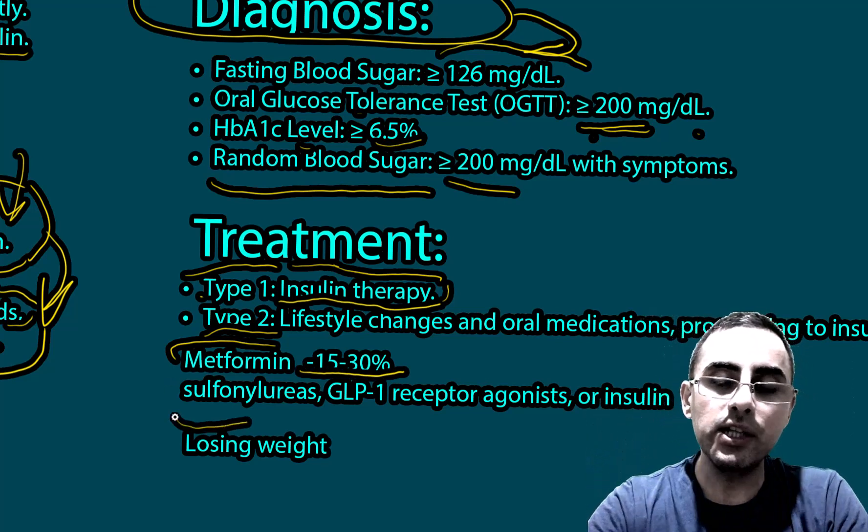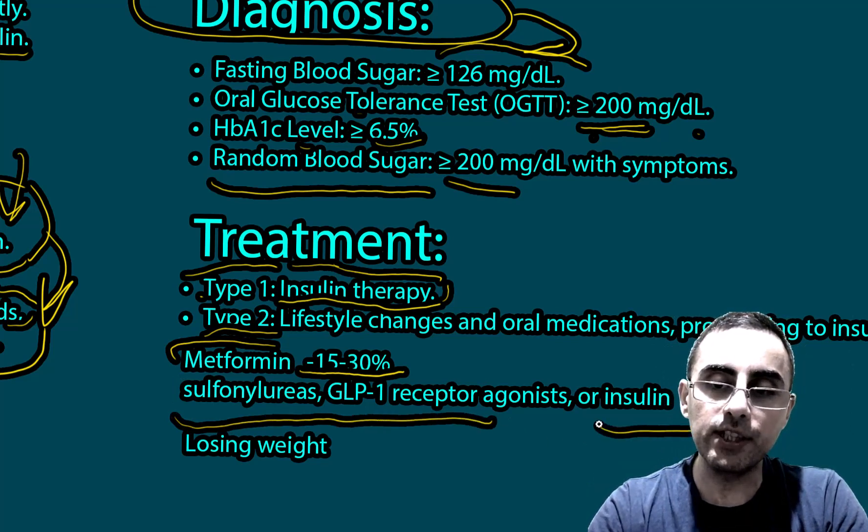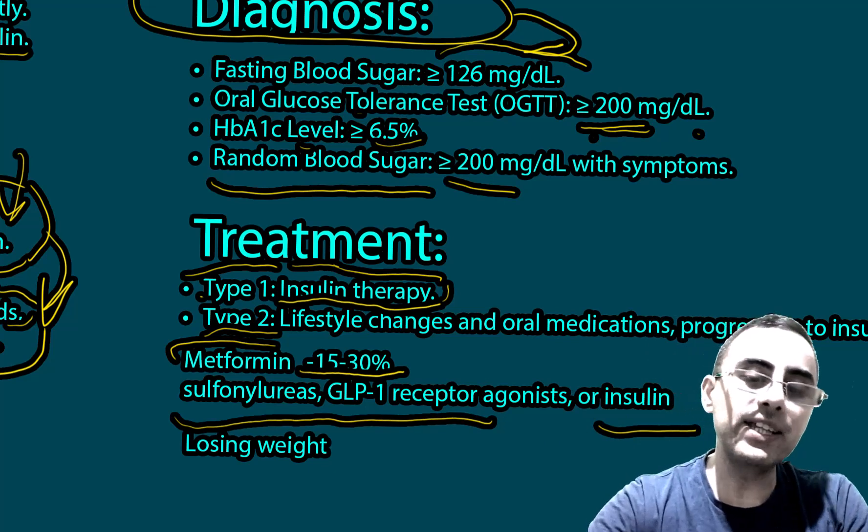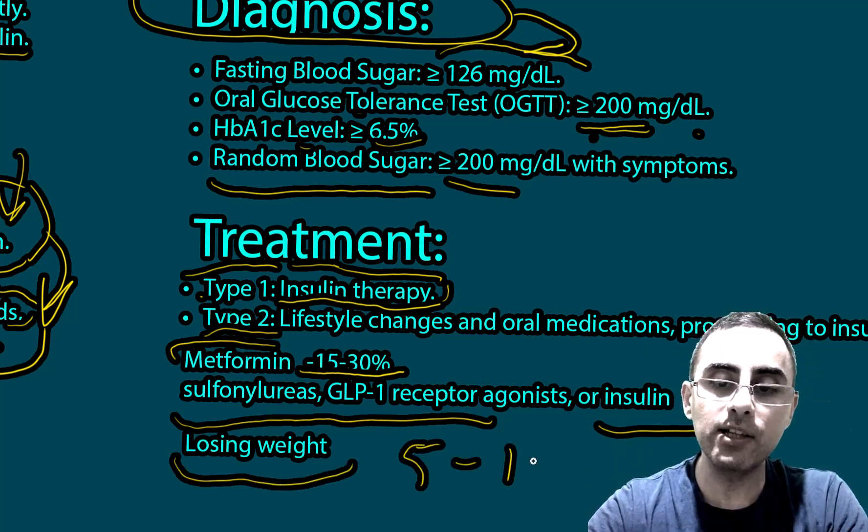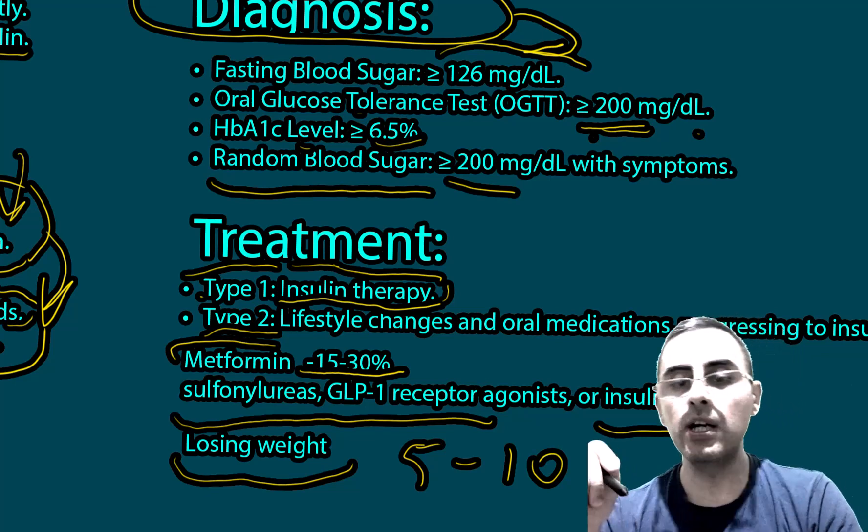Second-line treatments include sulfonylureas, GLP-1 receptor agonists, or insulin if needed. Weight loss is important — even 5 to 10 percent weight loss can meaningfully improve blood sugar levels. Diet with whole grains, less simple sugars, and more fiber is recommended. Physical activity should be at least 30 minutes per day, for example 30 minutes of walking.